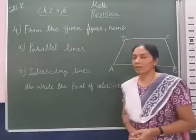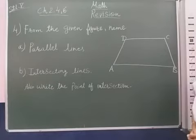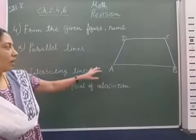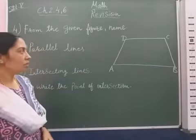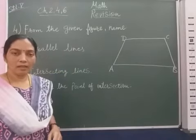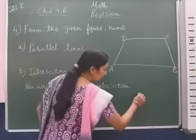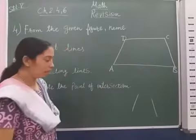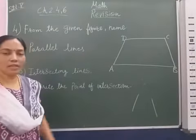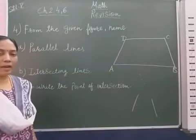Students, the question is given from the figure. We have to tell what are the parallel lines in this figure. Can we say that line DA and DB are parallel? No, because you can see that slanting lines are there. When these lines are extended they go in this side, so line DA and CB are not parallel lines.